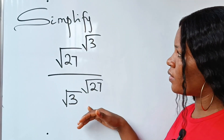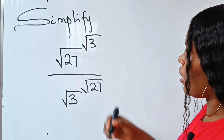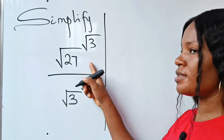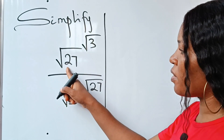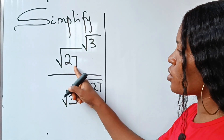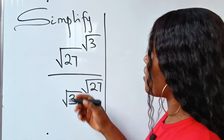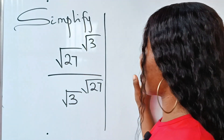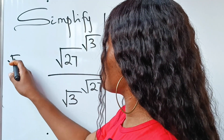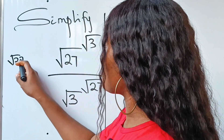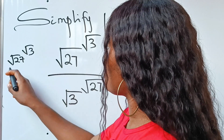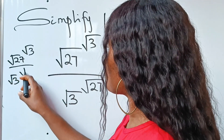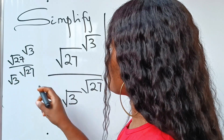Let's quickly solve this. To simplify, first let me recopy this so I'll have enough space to work with. We have root 27 to the power of root 3, divided by root 3 to the power of root 27.